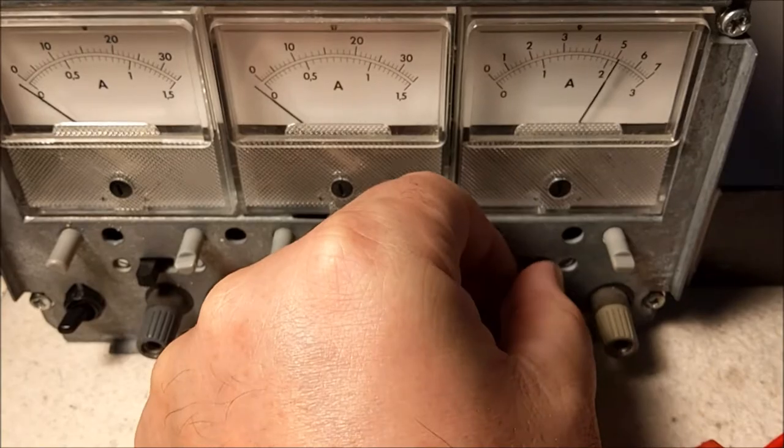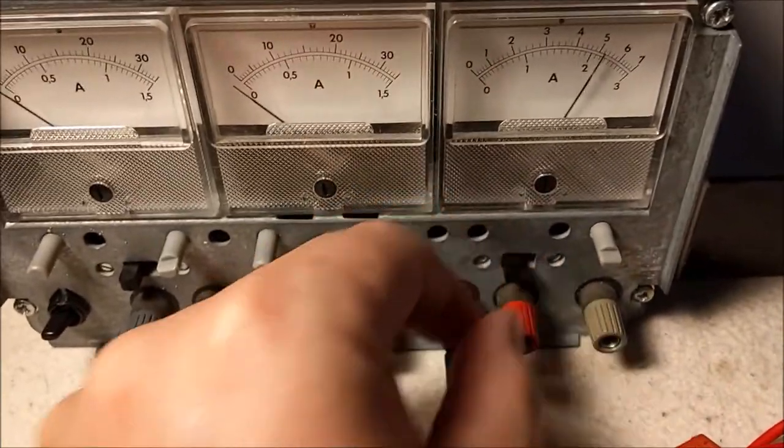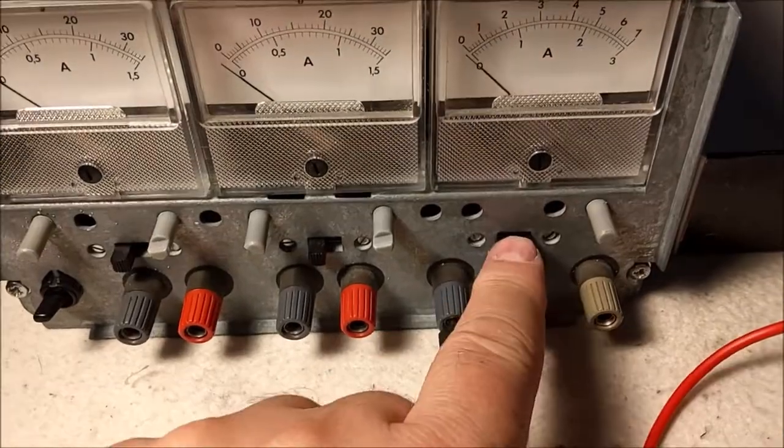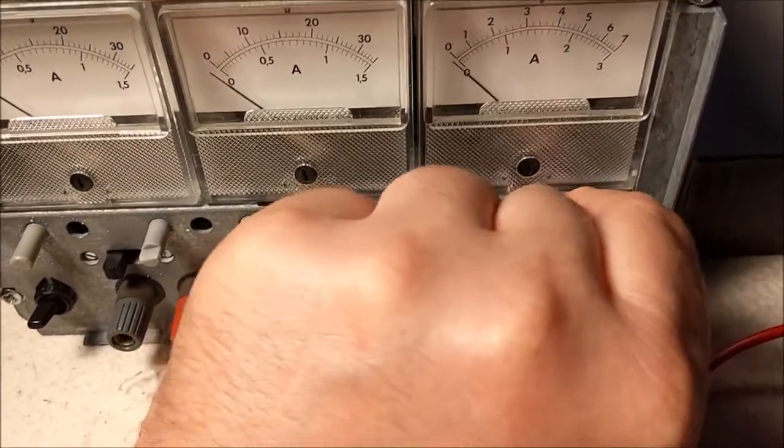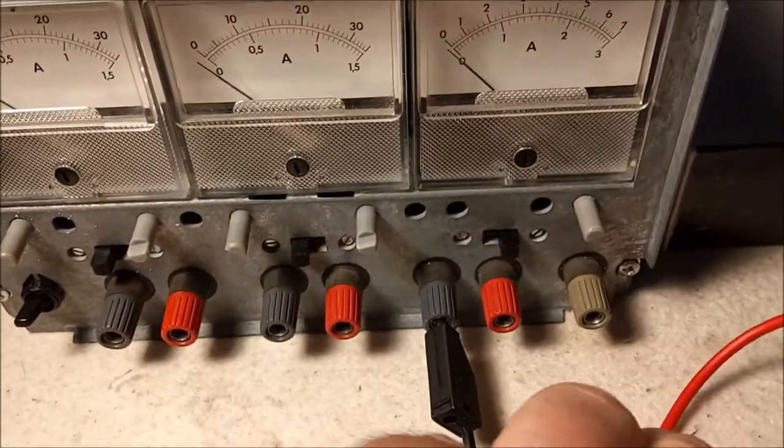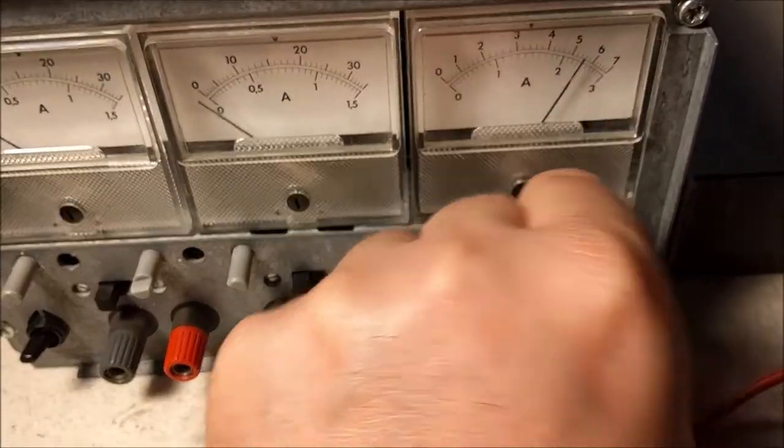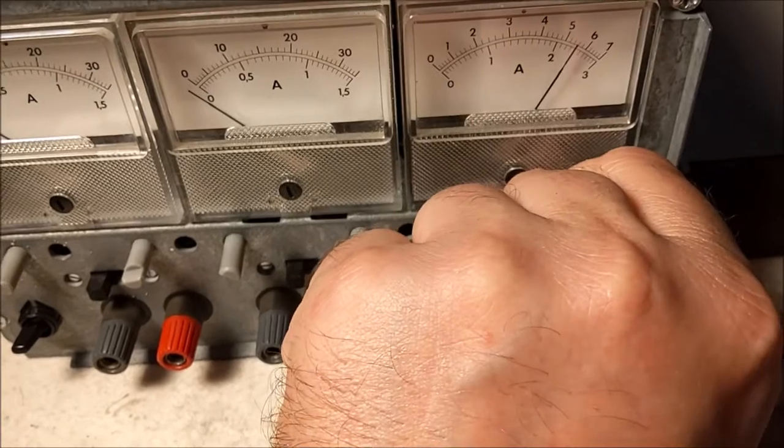So now I am going to connect those resistors and we should see two and a half amp because I've put this at a maximum of three. It should work. Let's have a look. Everything works. I can use the current reduction here to use the constant current functionality.